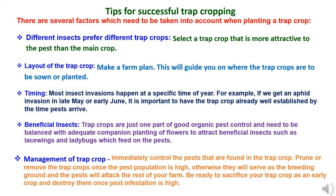Timing: Most insect invasions happen at a specific time of year. For example, if there is an aphid invasion in late May or early June, it is important to have the trap crop already well established by the time the pest arrives. Trap crops are just one part of good organic pest control and need to be balanced with adequate companion planting of flowers to attract beneficial insects such as lacewings and ladybugs, which feed on the pests.